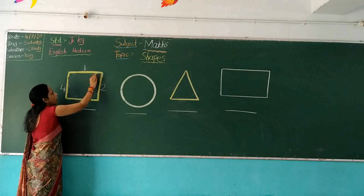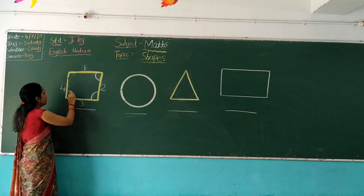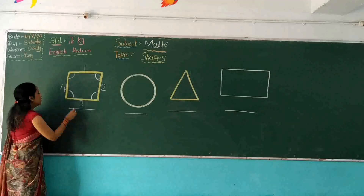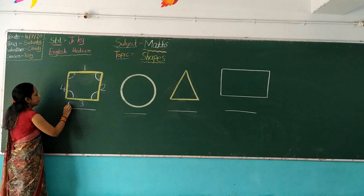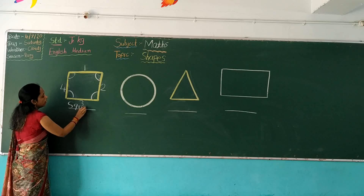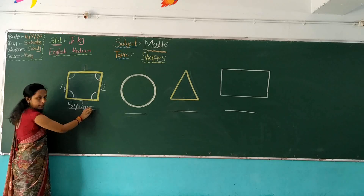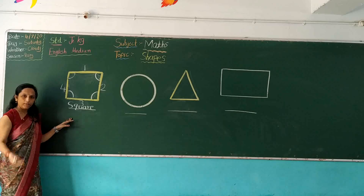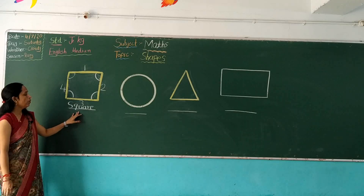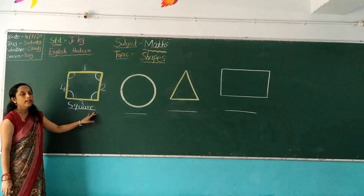1, 2, 3, 4. So, S, Q, U, A, R, E. Square. Repeat with me: S, Q, U, A, R, E. Square.